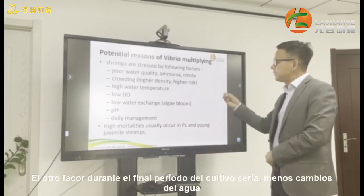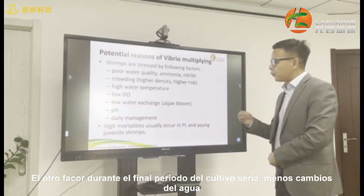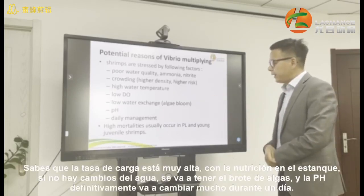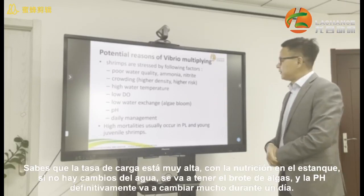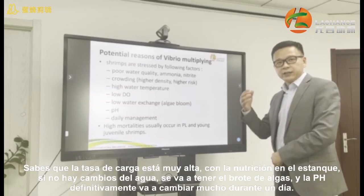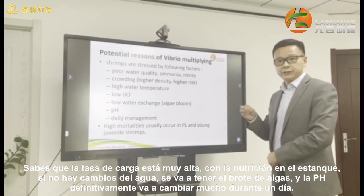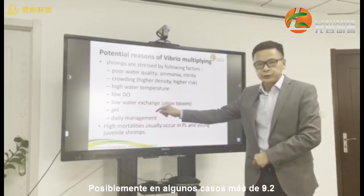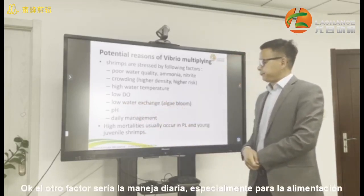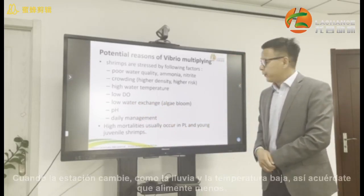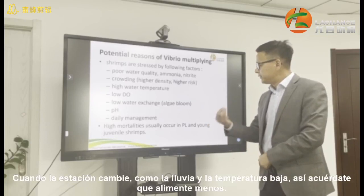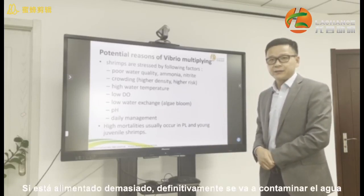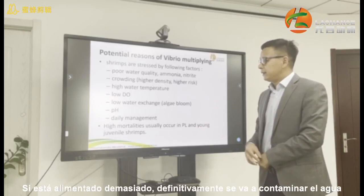Especially during the late part of culture, low water exchange is a problem. When the loading rate is so high and nutrients accumulate, if there is no water change, algae bloom will come in. Once algae bloom, your pH will fluctuate widely during the day — sometimes reaching 9.2. Another issue is daily management, especially feeding. When the weather changes — like a rainy day or when temperature goes down — remember to feed less. Otherwise, overfeeding will definitely pollute your water.